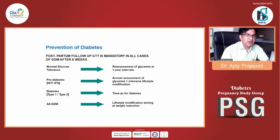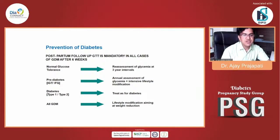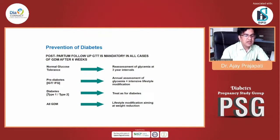If at the end of 6 weeks parameters favour type 1 or type 2 diabetes, then we should treat accordingly. However, if the patient is still breastfeeding, there are certain restrictions about use of molecules. All GDM patients, even if not having an abnormal result, should have lifestyle modification aiming at weight reduction, because in the postpartum stage there will be lots of weight gain that will create trouble later in life.